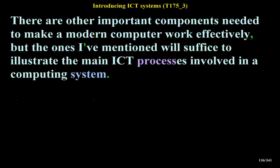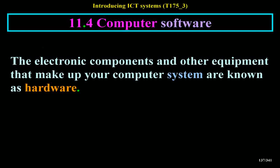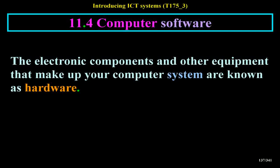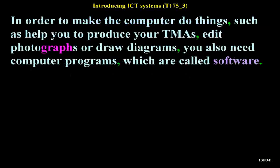There are other important components needed to make a modern computer work effectively, but the ones mentioned will suffice to illustrate the main ICT processes involved in a computing system. The electronic components and other equipment that make up your computer system are known as hardware. In order to make the computer do things — such as help you produce your assignments, edit photographs or draw diagrams — you also need computer programs, which are called software.